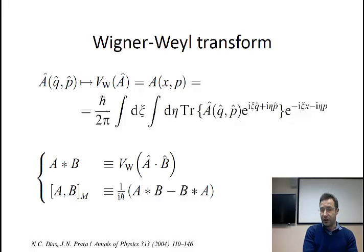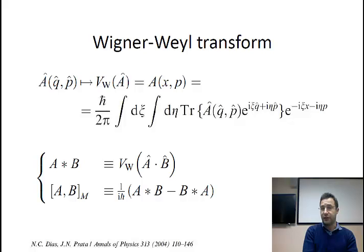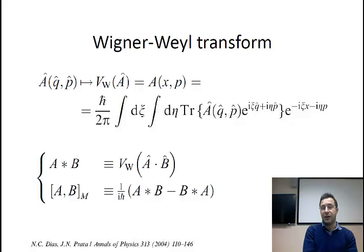Another interesting point — and interested readers can go to the paper at the bottom of this slide for details — is that the Wigner and the Schrödinger formulations are mathematically completely equivalent. As a matter of fact, you use the Wigner-Weyl transform reported here on the slide: you can start from a wave function and find the corresponding quasi-distribution function, and vice versa. This Wigner-Weyl transform is demonstrated mathematically to be invertible.